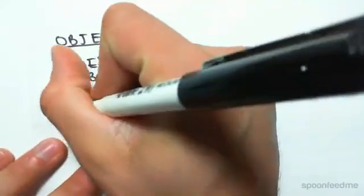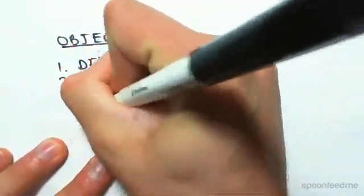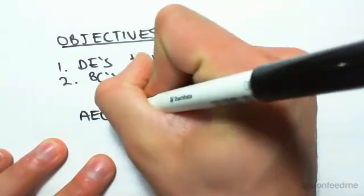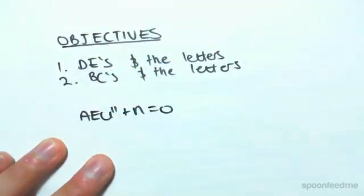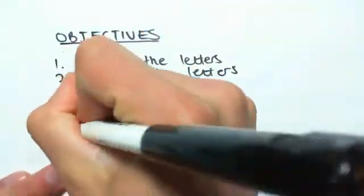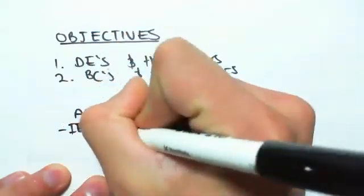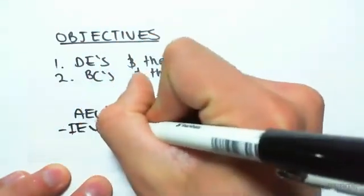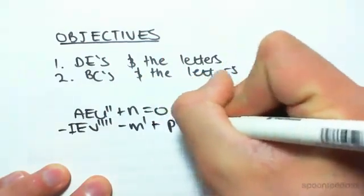The differential equations we have are: AE U double dash plus N equals zero, and we also have minus IE V quadruple dash minus M dash plus P equaling zero.